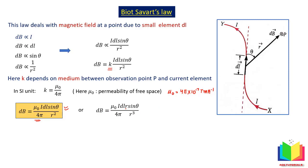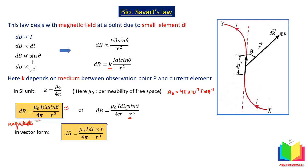We can also write this in vector form. The magnetic field produced at a point is a vector quantity. We calculated the magnitude; to also get the direction, we write dB = (mu naught / 4π) × (I dL × r̂) / r squared, using the cross product. Here dL is vector a, r is vector b, and a × b = ab sin theta, which gives the cross product I dL × r.